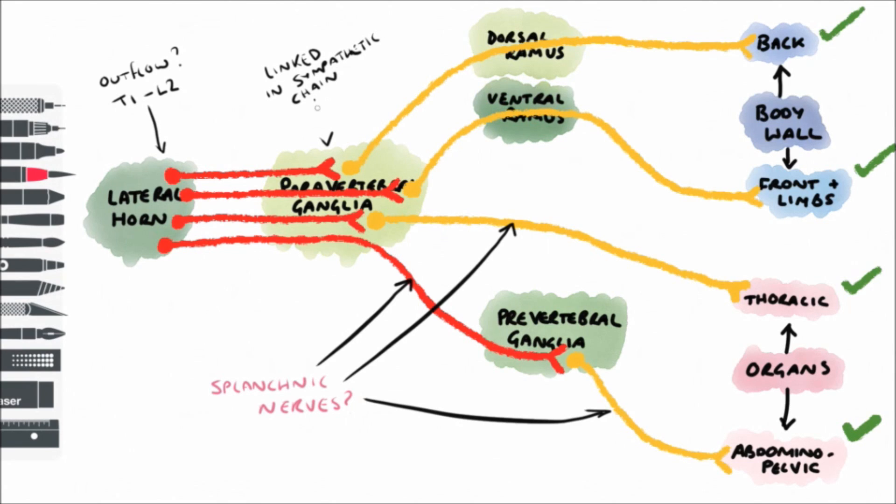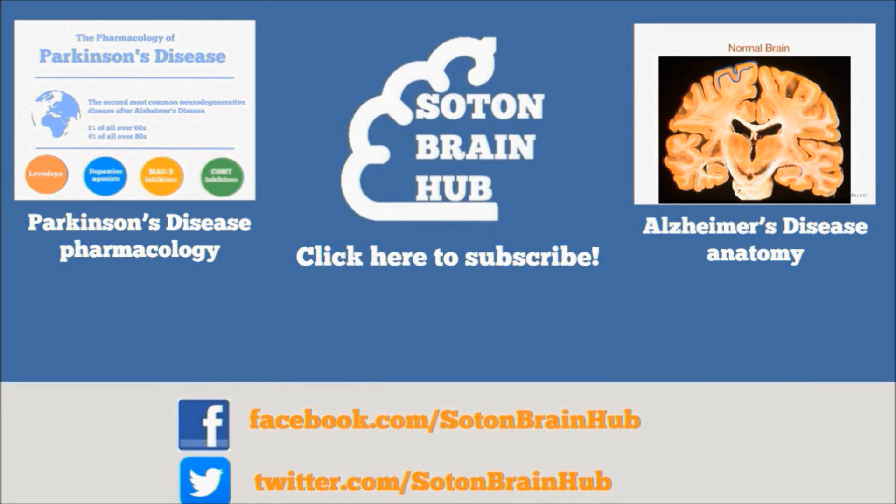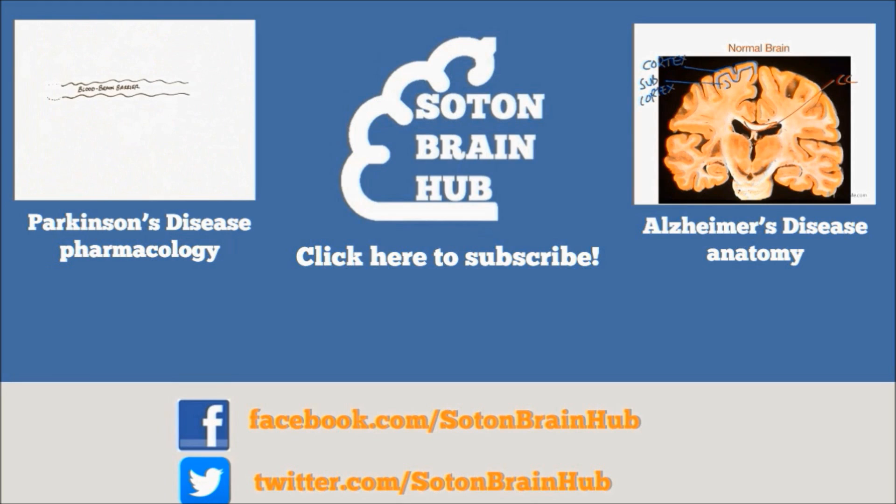So those are the big principles of the sympathetic nervous system. There are of course some exceptions, but hopefully this will help you understand the big picture. Thanks for watching, I hope you found it useful. Subscribe to Sotan Brain Hub for more videos to help explain the mysteries of the brain.